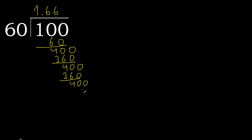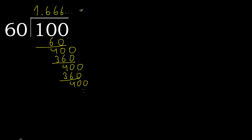Repeat, therefore repeat, therefore 6 repeats. So 100 divided by 60 is — here, after the point — 6 repeating. Therefore like this, ok.